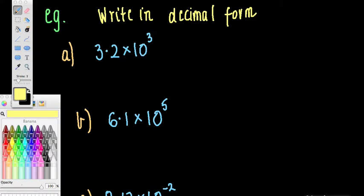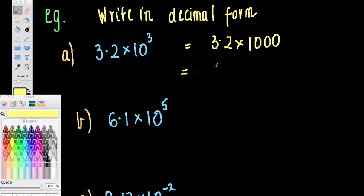Just a few more examples for you. Let's go the other way. Let's write in decimal form. So let's write as a normal number, how we would normally write these numbers. We've got 3.2 times 10 to the power of 3. So what this means is 3.2 times 1,000, because 10 to the power of 3 is 1,000. When you multiply by 1,000, we're moving that decimal point 1, 2, 3 times. Well, you can see that this would be equal to 3,200.